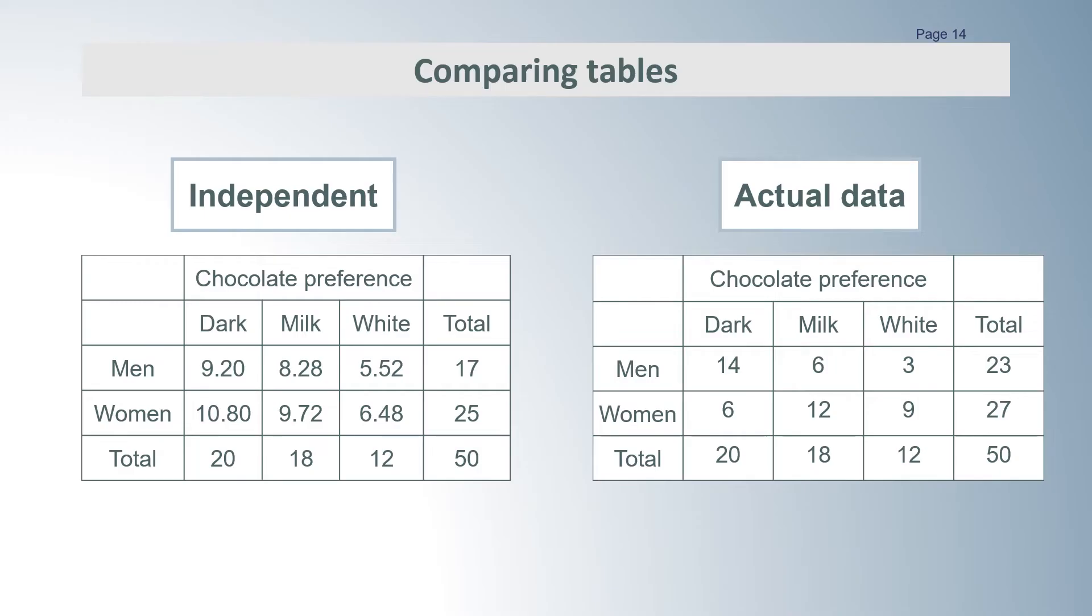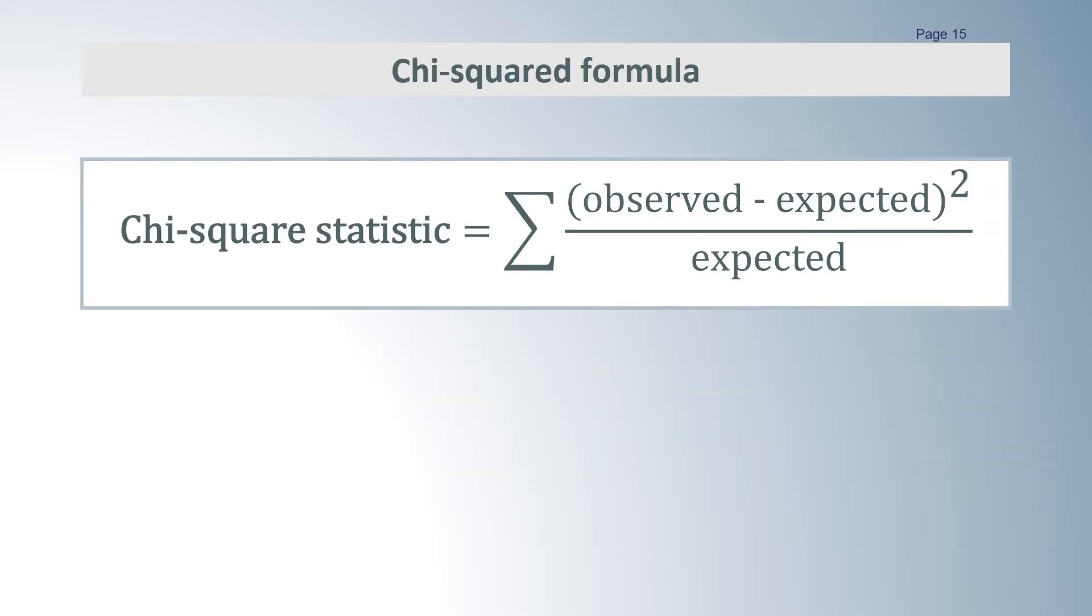How the test works is that for each of the cells we look at the difference between the observed value and the expected value. If we were going to do this by hand, which no one does, we would use the formula shown here. We find the difference between the observed value and the expected value, square it and divide by the expected value for each cell, then add them up.